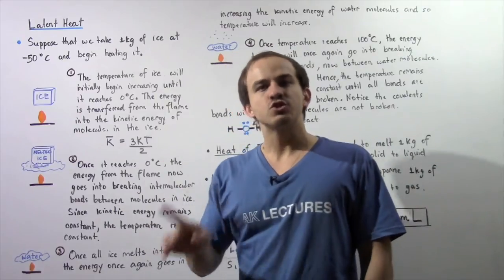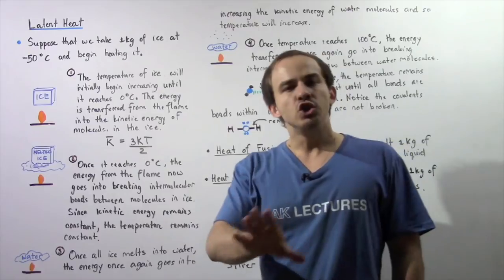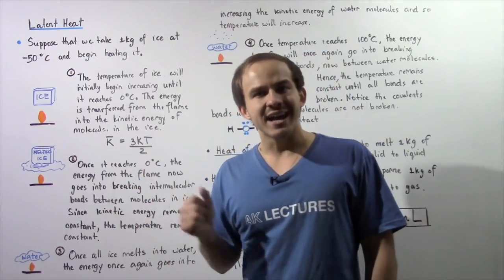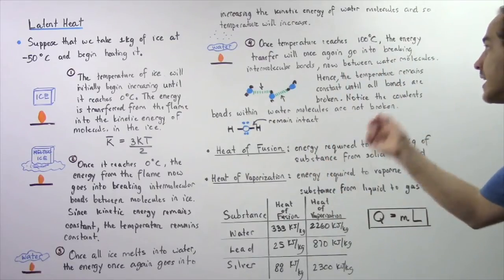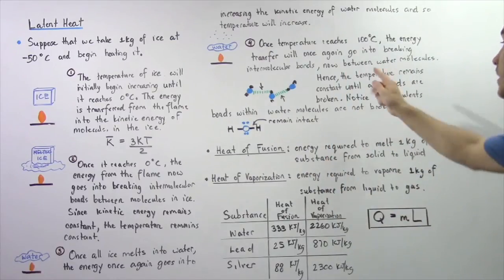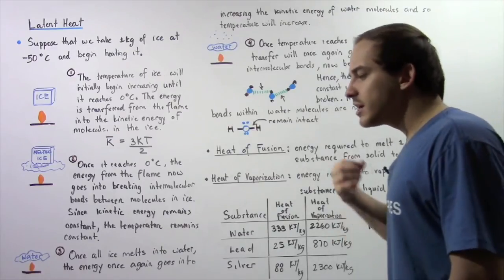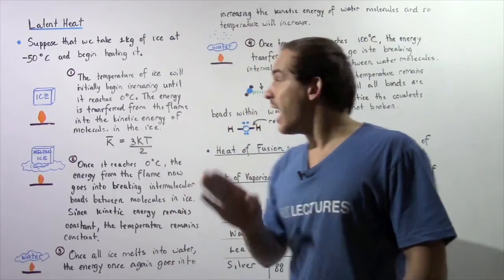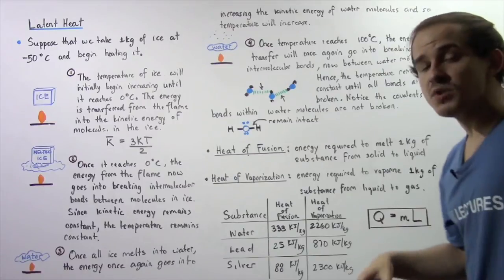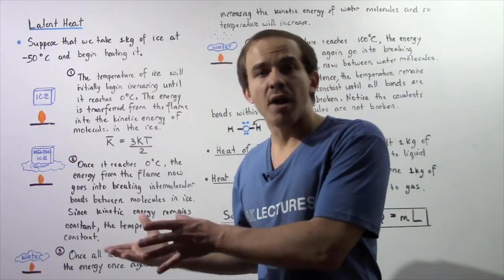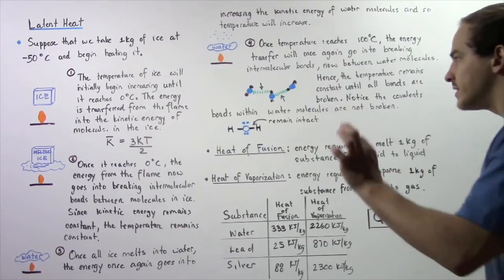At 100 degrees Celsius, once again, the energy coming from the flame no longer goes into increasing the kinetic energy, but rather it goes into breaking the intermolecular bonds between liquid water molecules. Because the kinetic energy remains constant, the temperature also remains constant until all the intermolecular bonds have been broken.